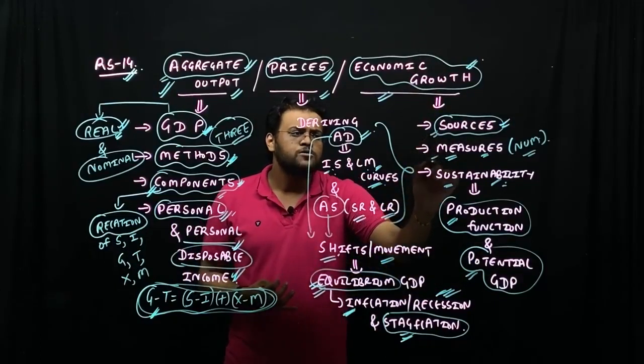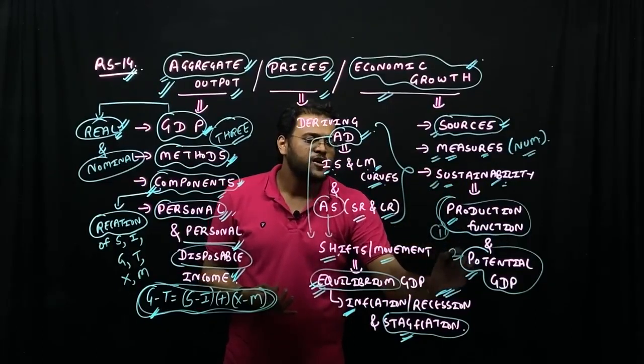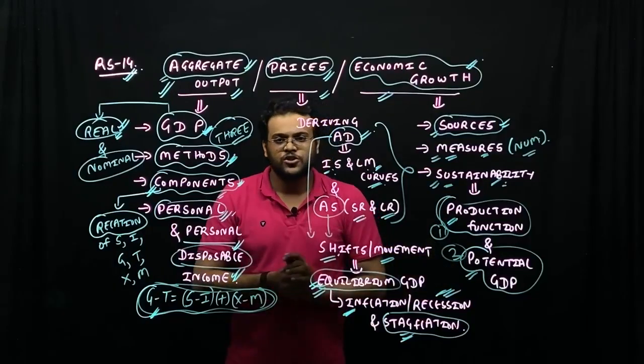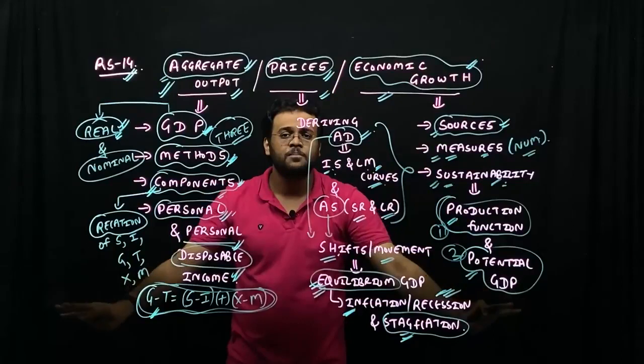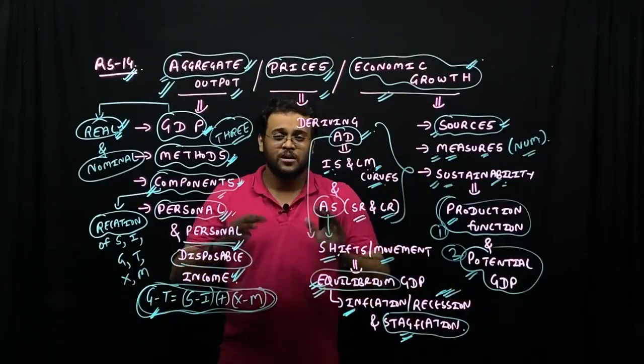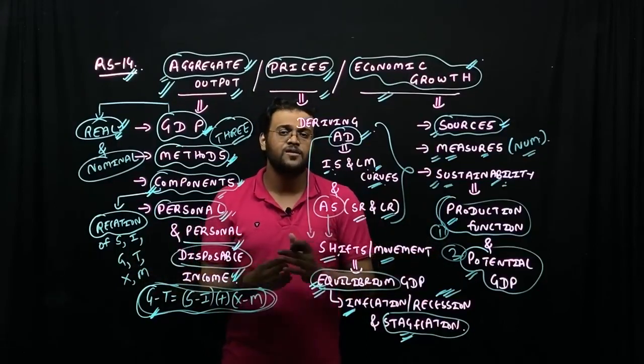So we have a small content here. What are the sources? How to measure? What is the sustainability of economic growth? For that we need to understand production function and potential GDP. So this will be our whole reading session number 14. So it is one of the most lengthiest chapters.